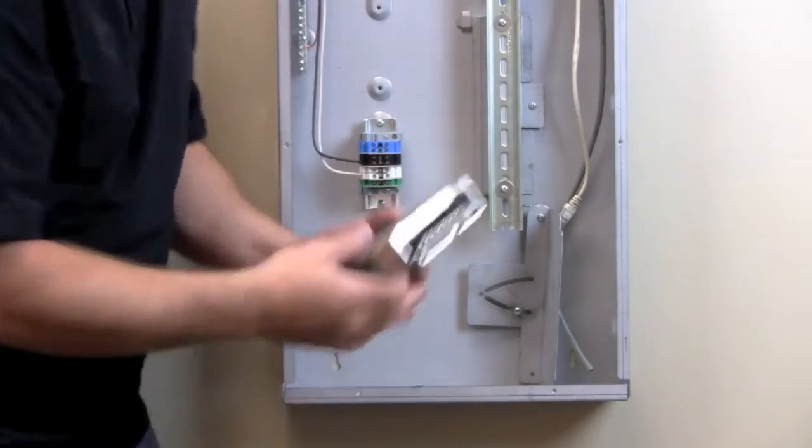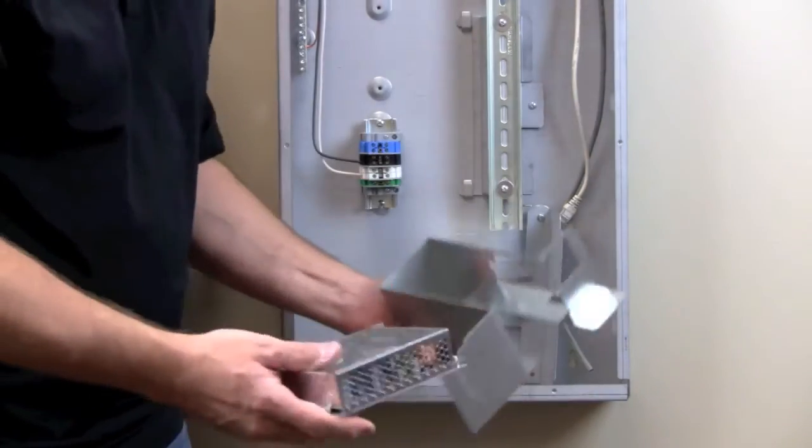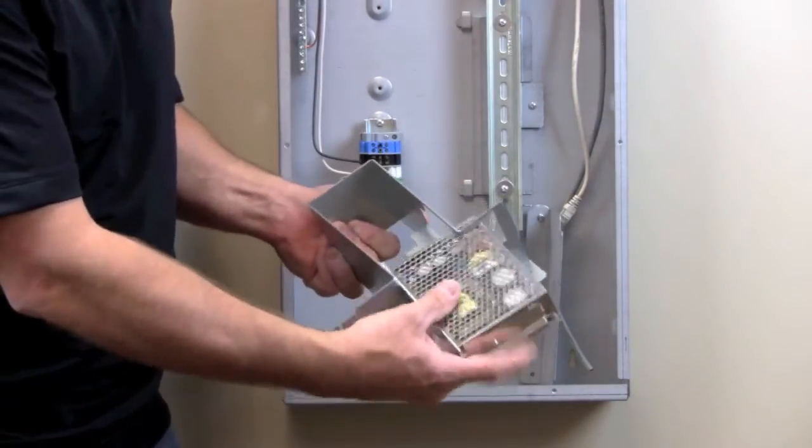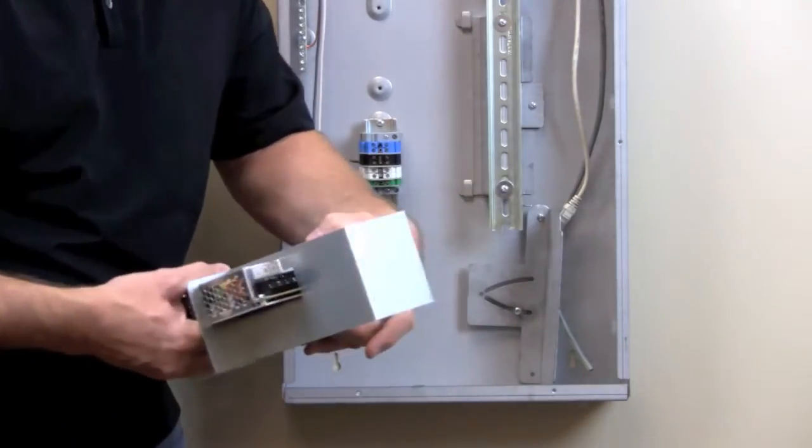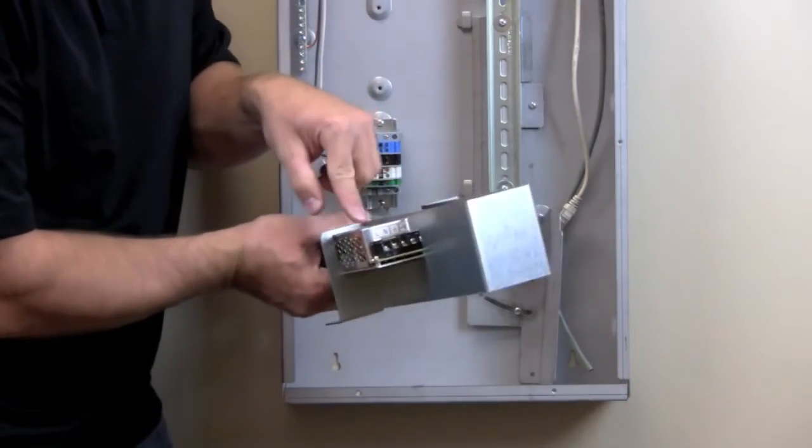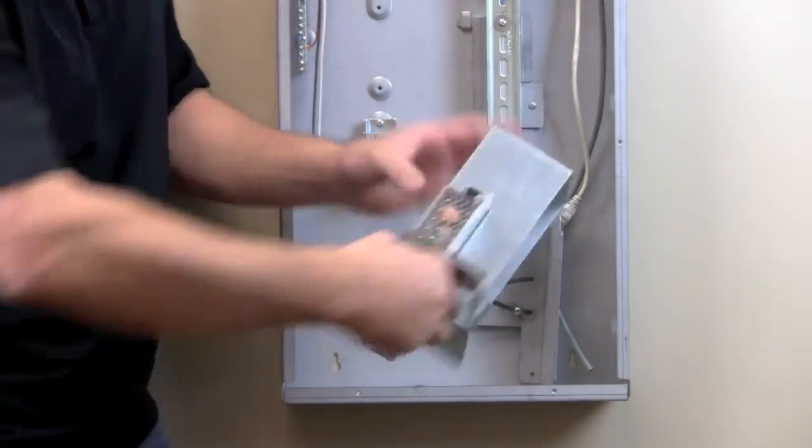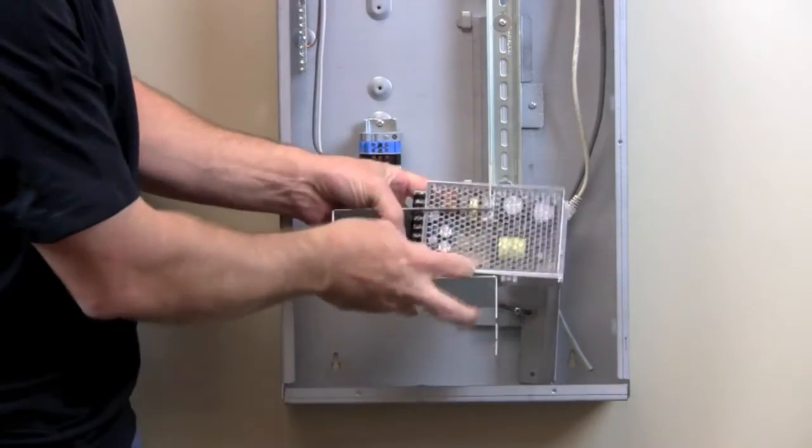So take that cover, set it aside, and with the bracket right here, the power supply mounts in right here. The way that it mounts is the line, neutral, and the ground is on the high voltage side of things.